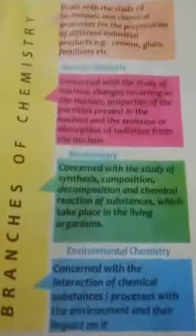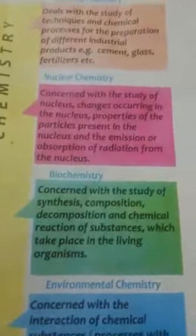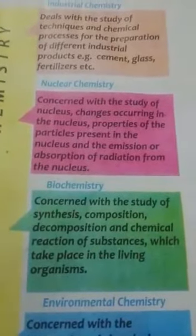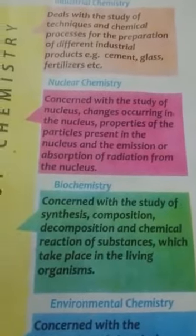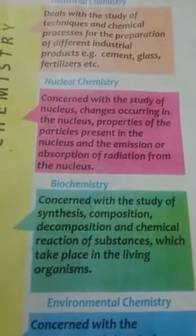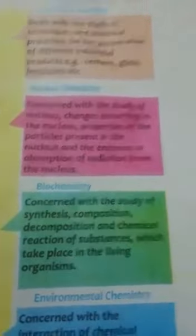Now look at the next branch, which is called nuclear chemistry. Look at the definition first in your book. It is concerned with the study of the nucleus, changes occurring in the nucleus, properties of the particles present in the nucleus, and the emission or absorption of radiation from the nucleus.